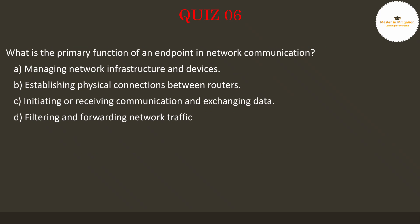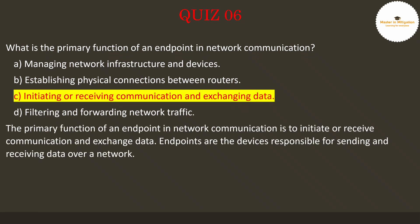Let's go to question 6. What is the primary function of an endpoint in network communication? Pause the video now to select the best answer. The answer is C — initiating or receiving communication and exchanging data. The primary function of an endpoint is to initiate or receive communication and exchange data. Endpoints are the devices responsible for sending and receiving data over a network.